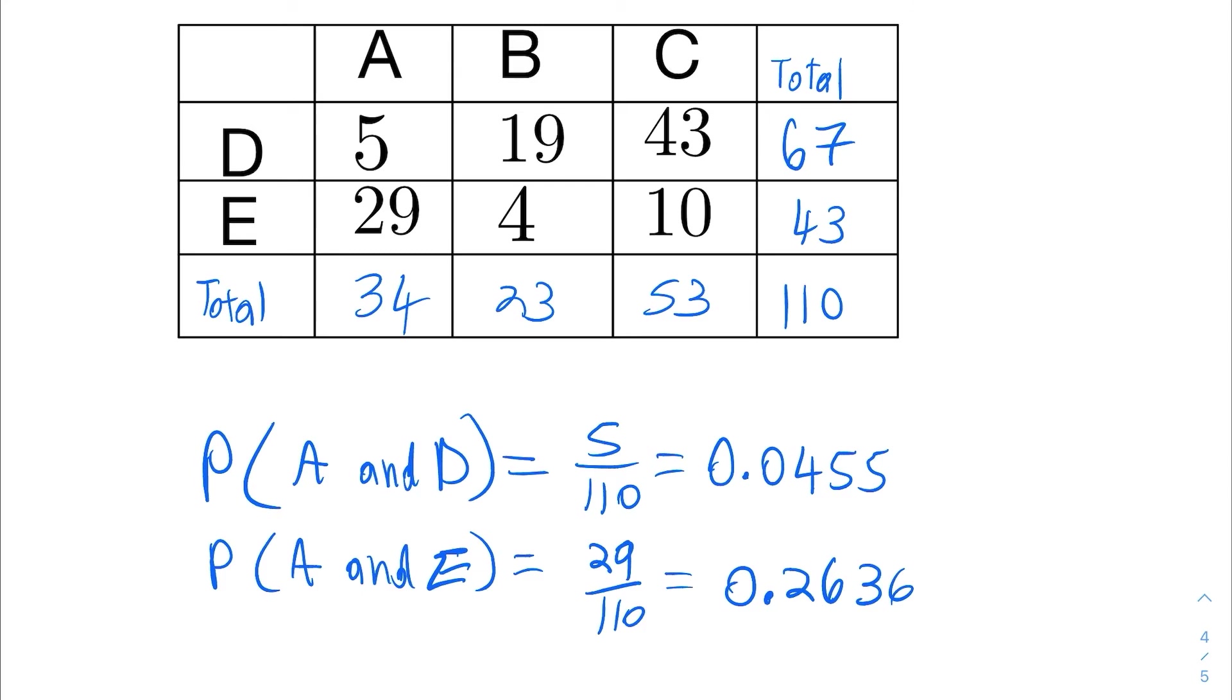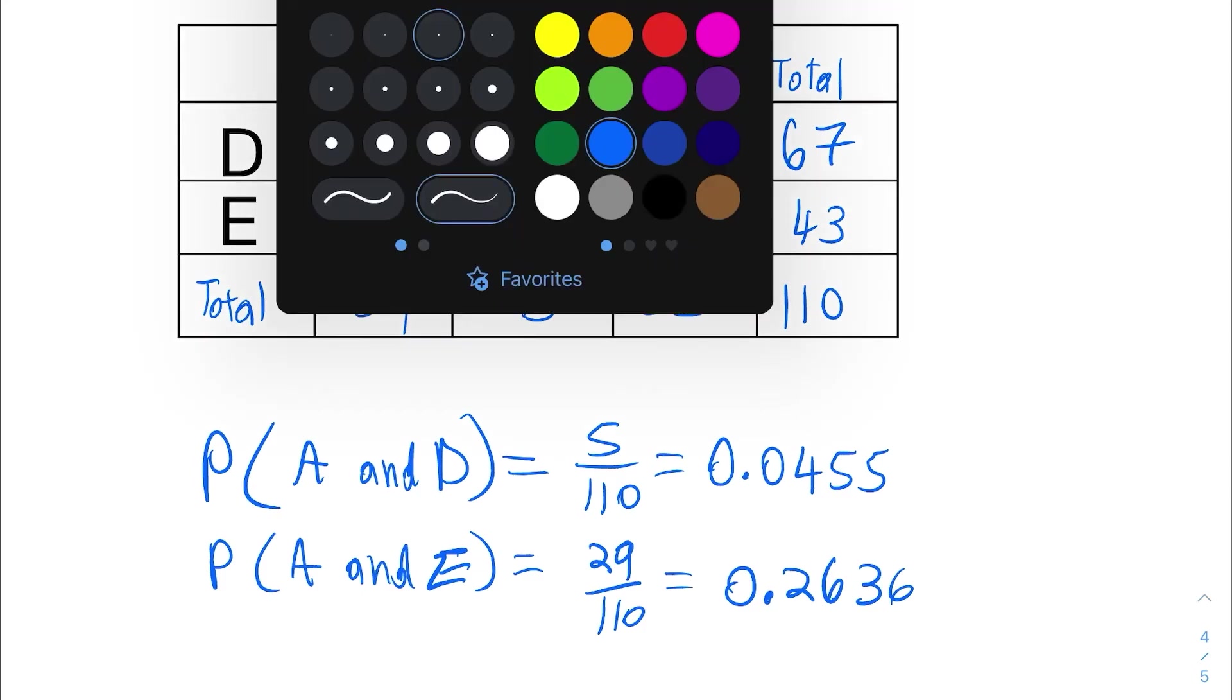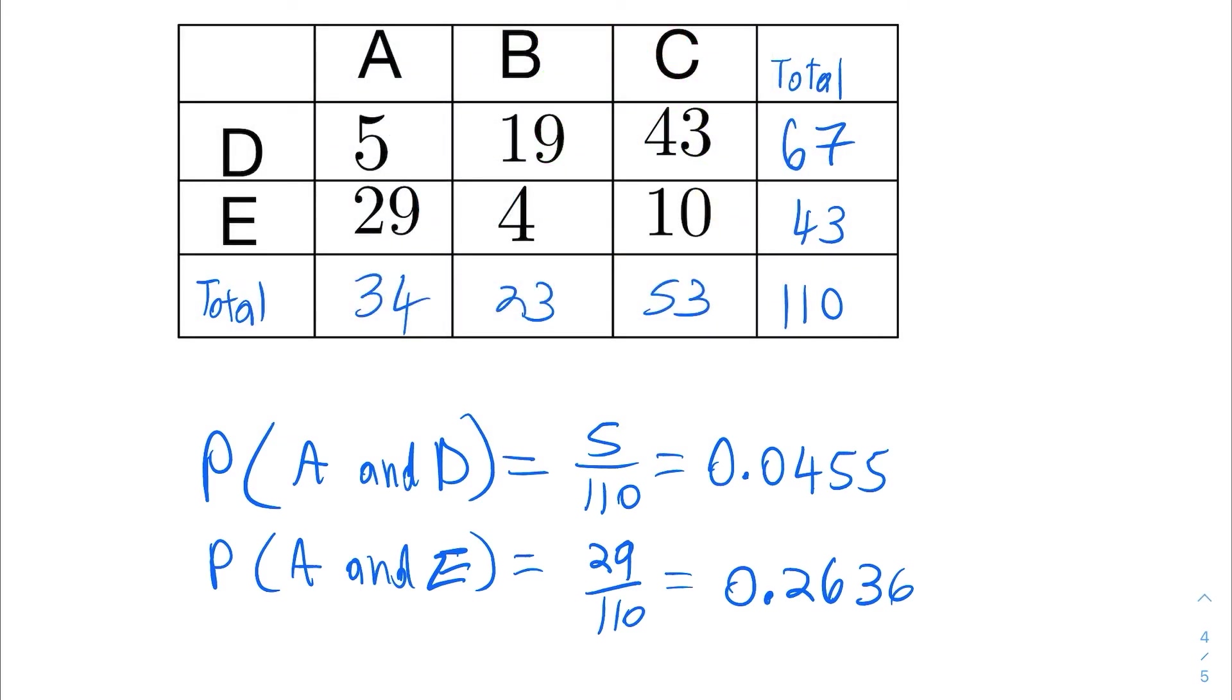And we have the other joint probabilities there. For instance, the next one would be, let's try one last one. Let's look at the probability of C and E. The probability of C and E, we just go to the intersection of C and E. And the joint probability there would be 10 over 110. And the probability of C and E then is roughly 9%.